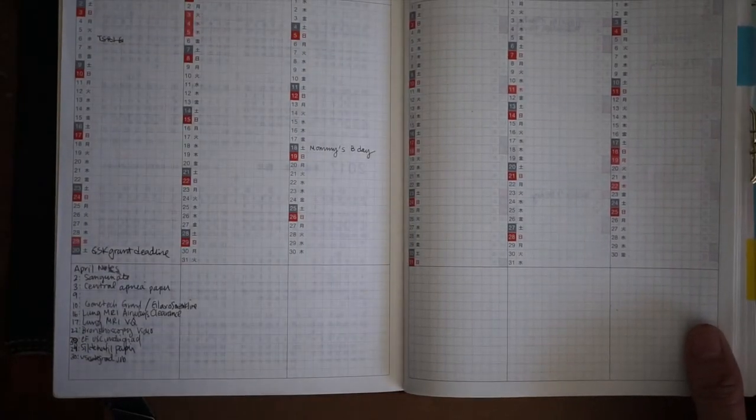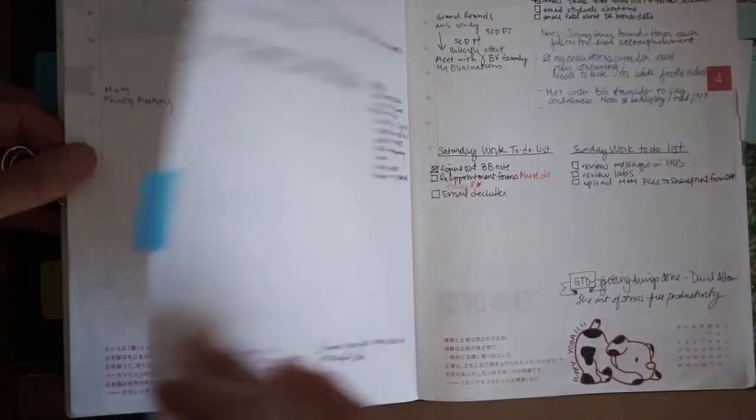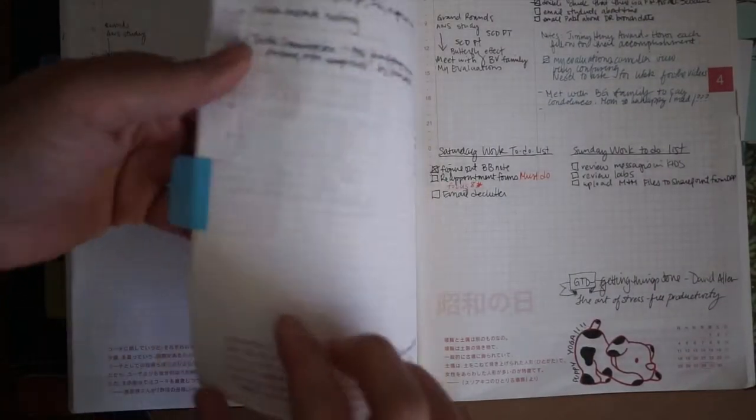So it'll be about some type of project that I need to complete and it'll have all the notes and the to-do list for that specific project. And then if I need to do something on a particular day, I move it then to the day layout, so that way I know exactly what's going to happen on a specific day.